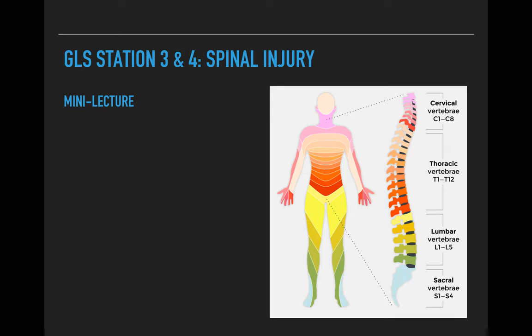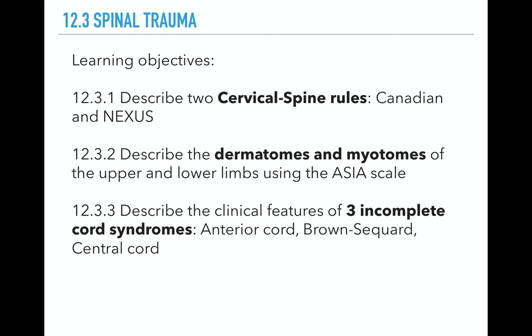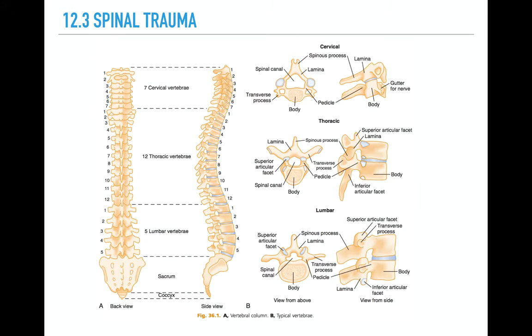G'day everyone. Welcome to the mini-lecture for GLS station 3 and 4 about spinal injury. The learning objectives for this mini-lecture are: we're going to look at the C-spine rules, the Canadian and Nexus, and we're going to look at dermatomes and myotomes and cover three incomplete cord syndromes.